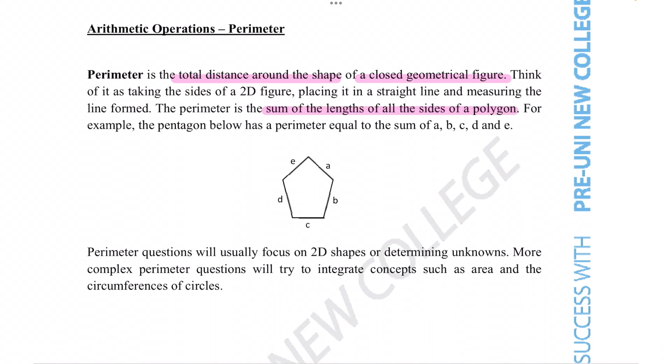For example, the pentagon below has a perimeter equal to the sum of A, B, C, D and E. Perimeter questions will usually focus on 2D shapes or determining unknowns. More complex perimeter questions will try to integrate concepts such as area and the circumferences of circles.